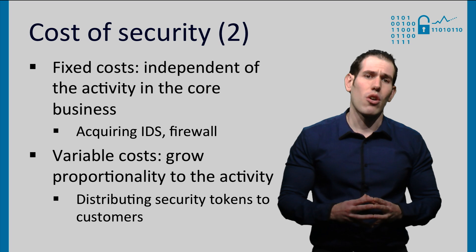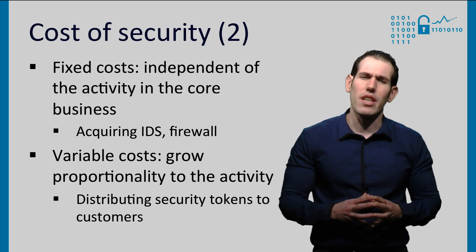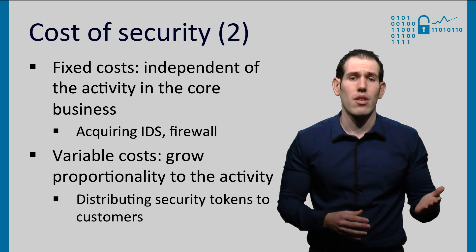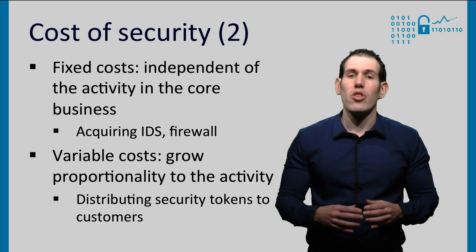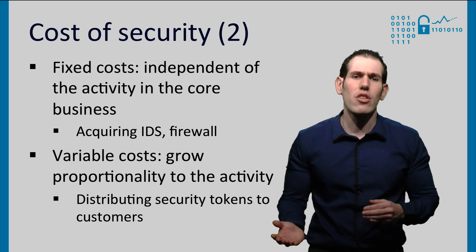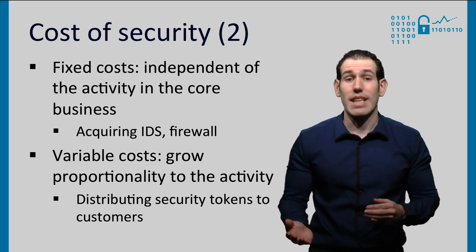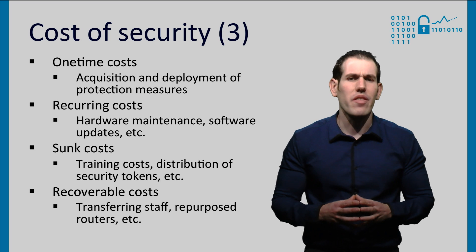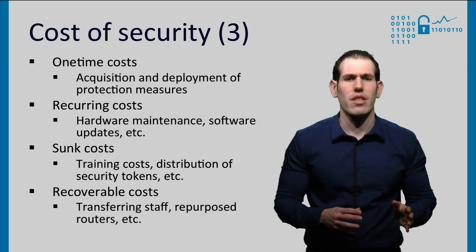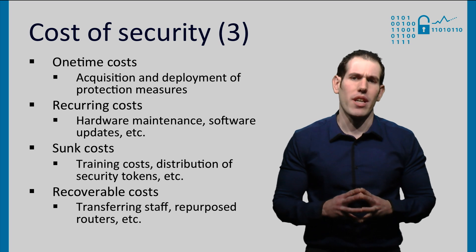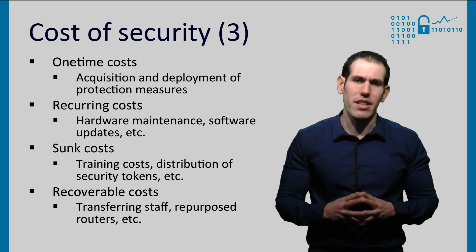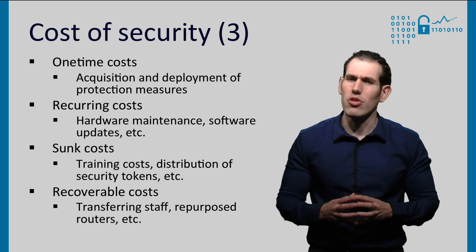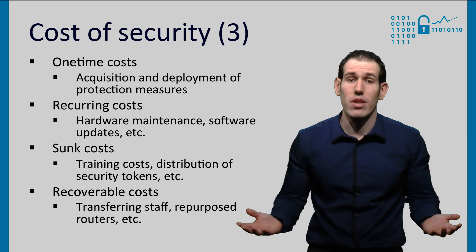Sometimes it will be useful to express the cost of security as a function of the economic activity in the core business. On the one hand, we have fixed costs, which are independent of the core business activity — for instance, acquiring new software. On the other hand, we have variable costs, which grow proportionally to the activity, like the cost of distributing security tokens to customers. Finally, we can further divide costs depending on their periodicity. While the acquisition and deployment of protection measures is typically a one-time cost, maintenance and indirect costs are often recurring. In certain situations it is useful to consider sunk costs, which cannot be recovered when decommissioning protection measures.